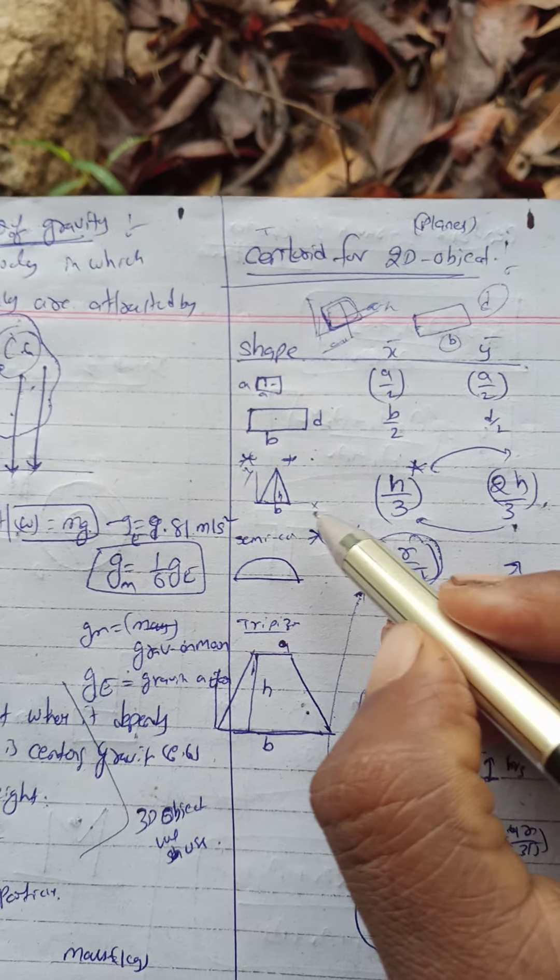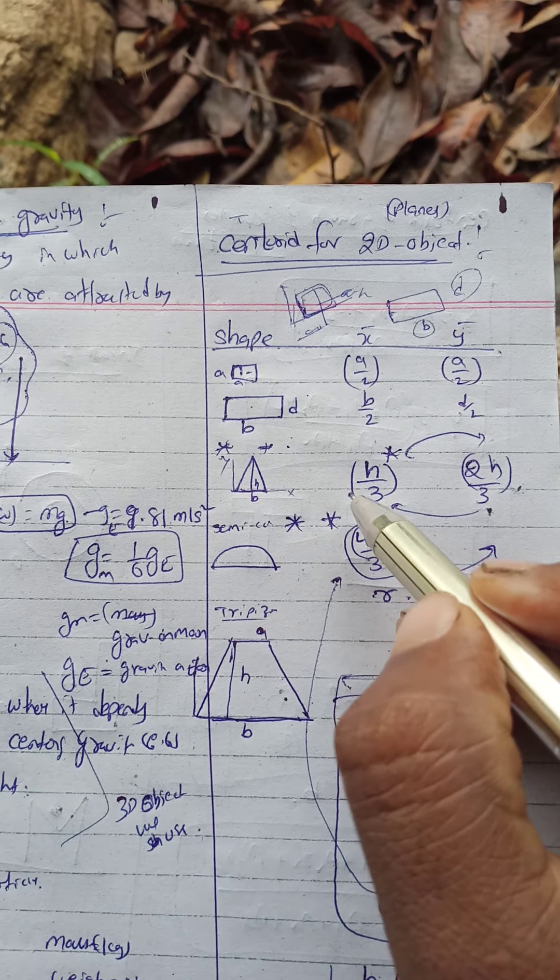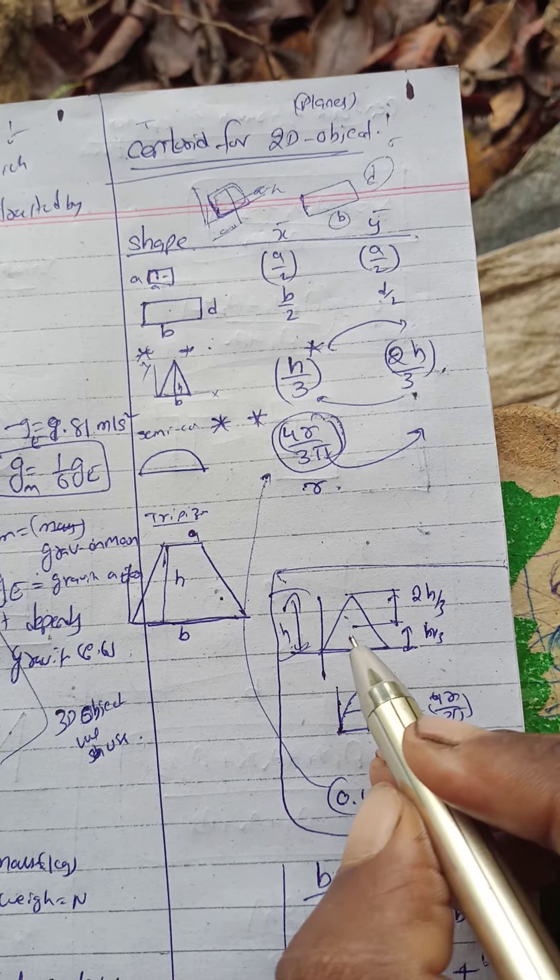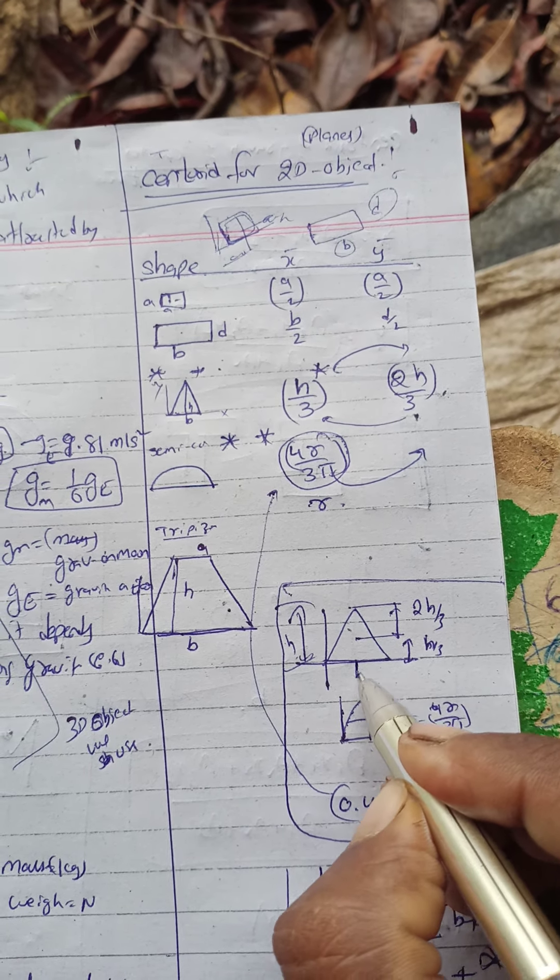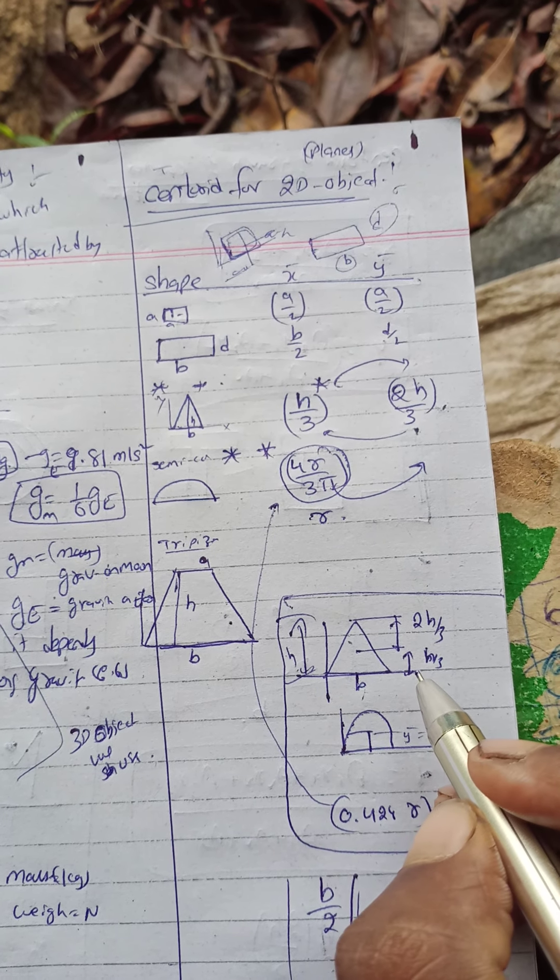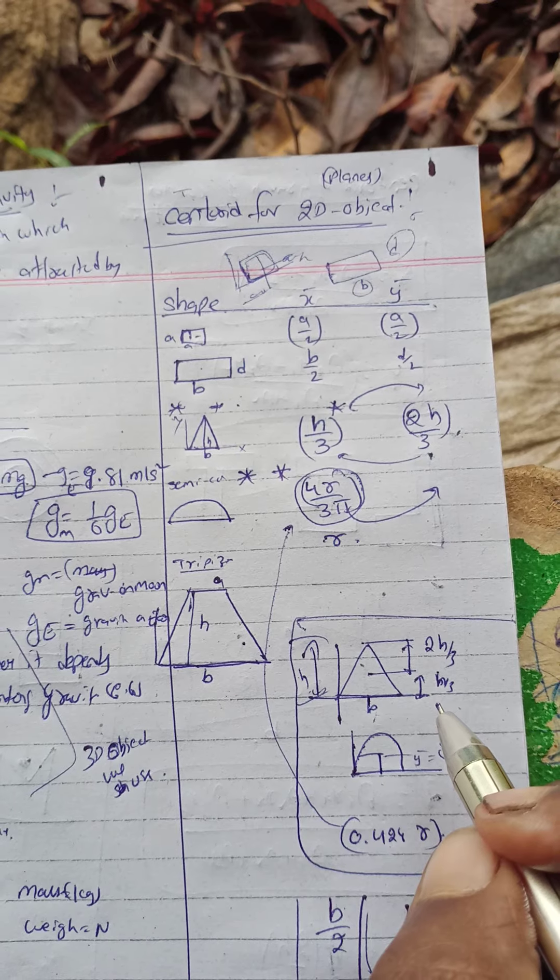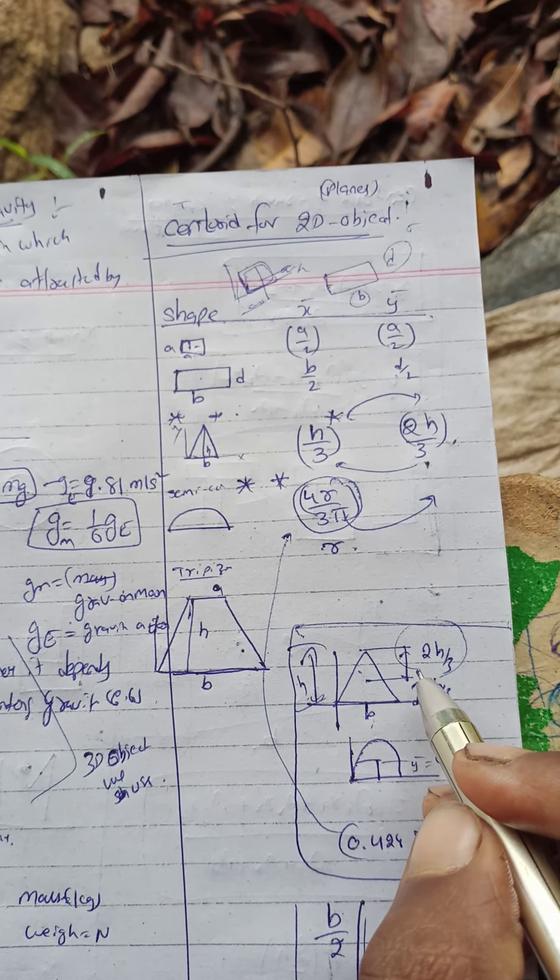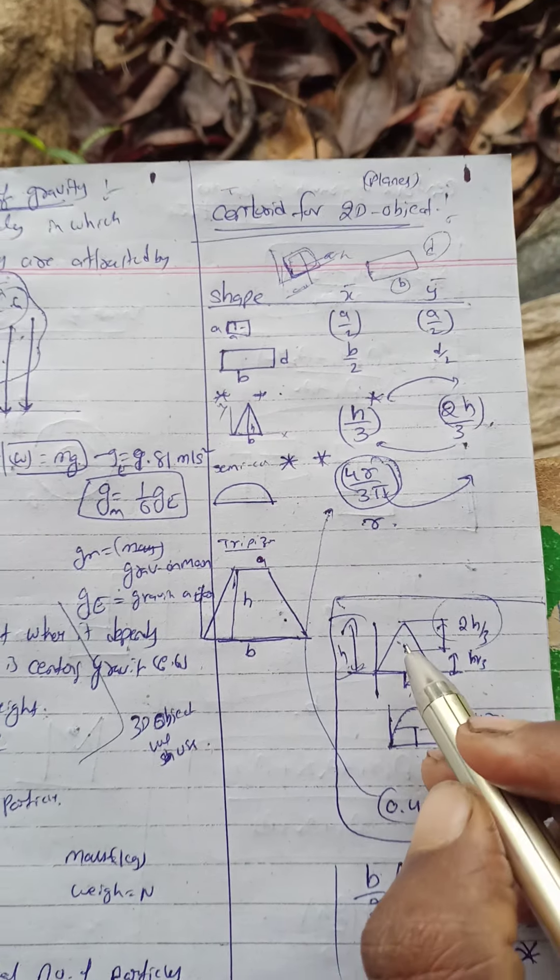Next, if you take a triangle, on the x-axis it is 2h/3. Next, if you take on the y-axis, it is h/3.